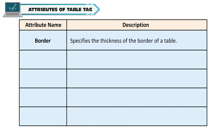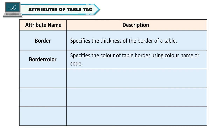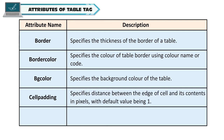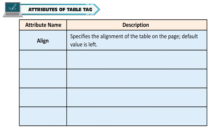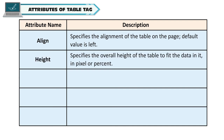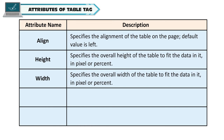Attributes of the table tag: Border specifies the thickness of the border. Border color specifies the color of the table border using a color name or code. BG color specifies the background color of the table. Cell padding specifies the distance between the edge of a cell and its contents in pixels, with default value 1. Cell spacing specifies the minimum distance between adjacent cells in pixels, with default value 2. Align specifies the alignment of the table on the page, default is left. Height and Width specify the overall dimensions of the table in pixels or percent.